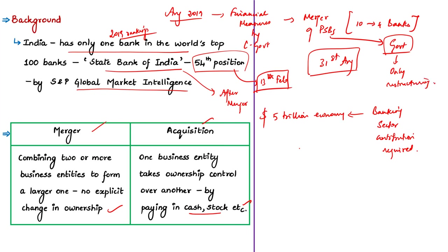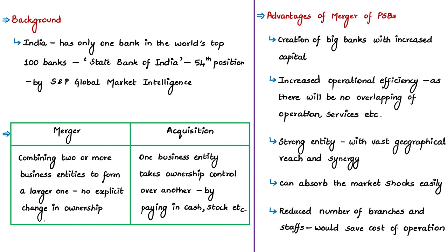The advantages of mergers include: creation of big banks similar to SBI with enhanced credit capacity, since the combined capital of the merged entity will be huge. Mergers are also expected to increase operational efficiency by avoiding existing network overlaps — where two or three public sector banks in the same area provide similar services, the merger will streamline these overlapping operations. The merged entity will also have a stronger balance sheet with a vast geographical reach and pan-India presence.